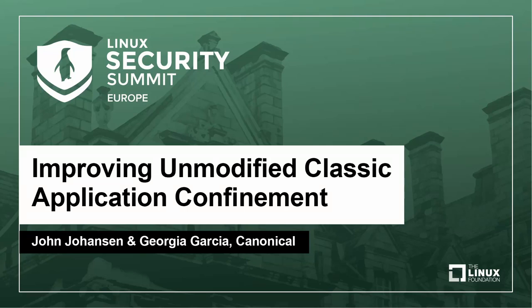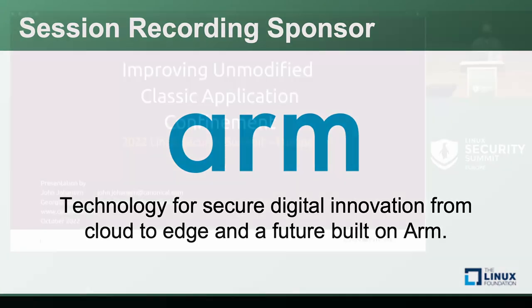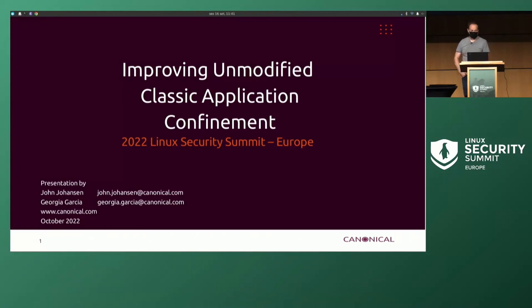I'm John Johansson from Canonical, and George is my partner in crime here. She's going to give support today on a machine that works. All right, so let's get moving.